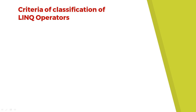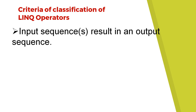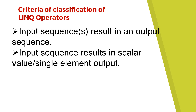First I want to tell you how we categorize the LINQ operators and what the classification criteria are. There are three criteria. The first one is: input sequence results in output sequence. For example, you are getting integer values as input and giving the output in sorted format — input is unsorted integers, output is in sorted form.